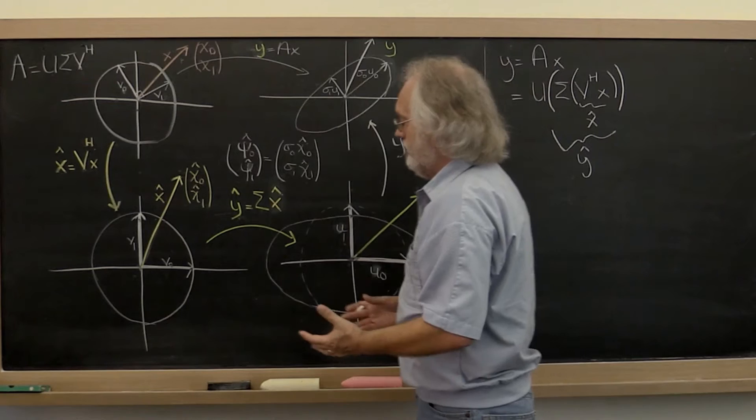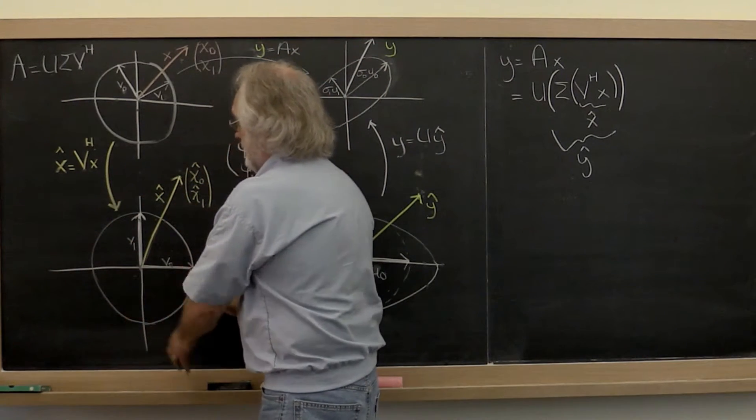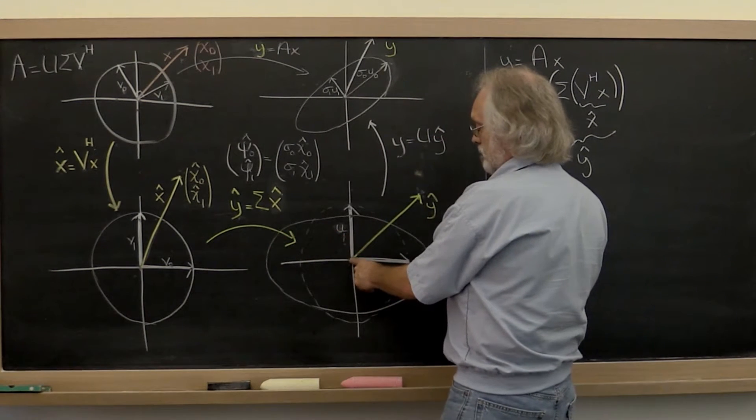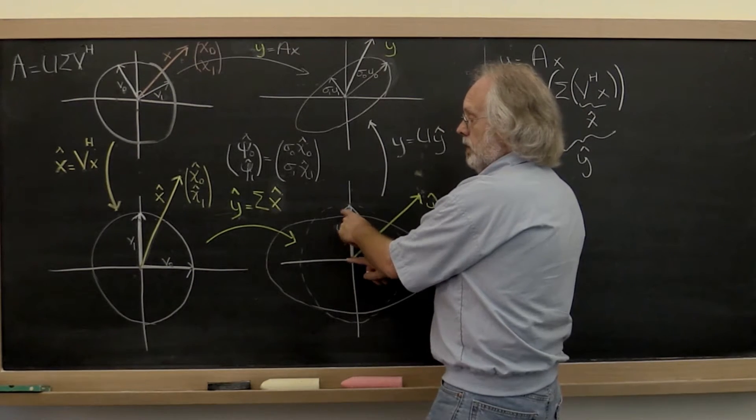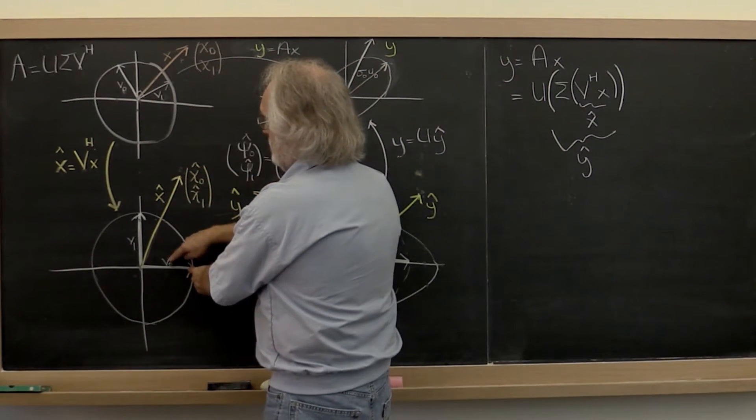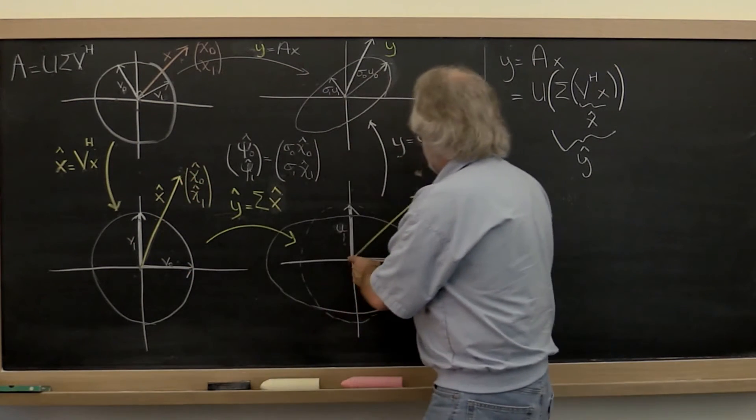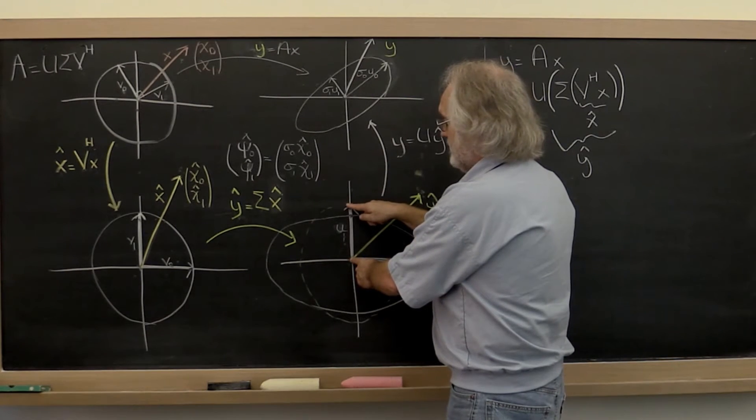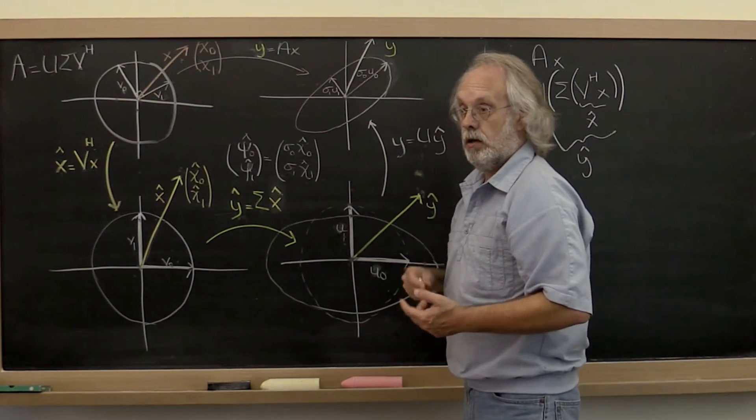Or you can say the unit ball here is transformed into this stretched unit ball here, where this here represents sigma zero and this sigma one. And then whatever linear combination of V zero and V one you take here in order to get x hat is the linear combination of sigma zero times U zero and sigma one times U one that you have to take in order to create y hat.